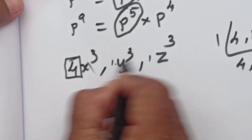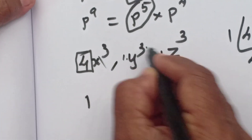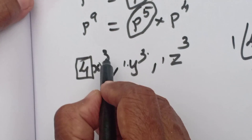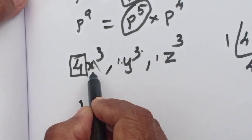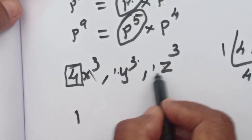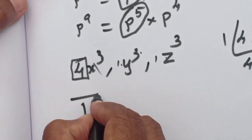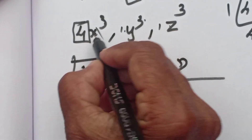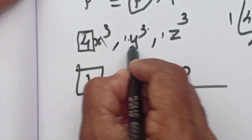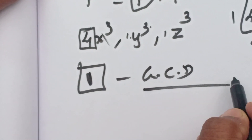So this is the GCD: 1. Let's see x cube, y cube, z cube. What is the common? You should not see this alone — this is the base: x, y, z. The base is different. Is there any common? No. So 1 is the GCD. The HCF, highest common factor, is the GCD. GCD is 1 because x, y, z are different bases. That's why 1 is the GCD.